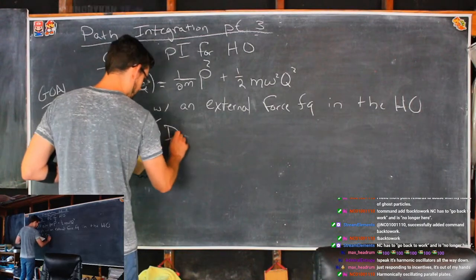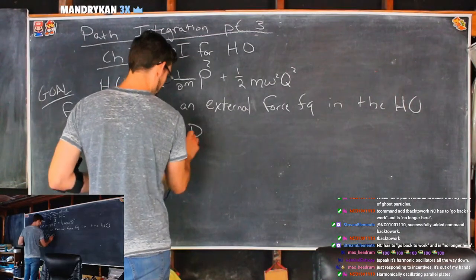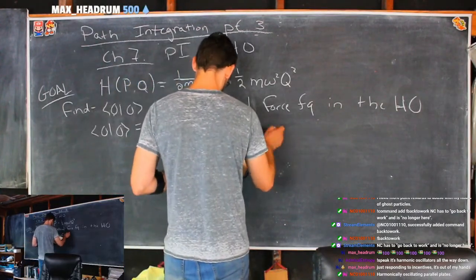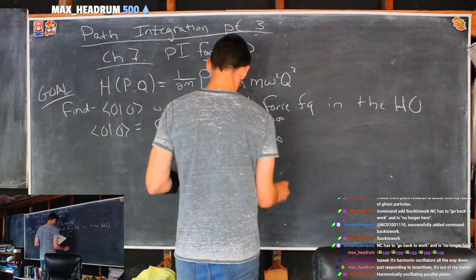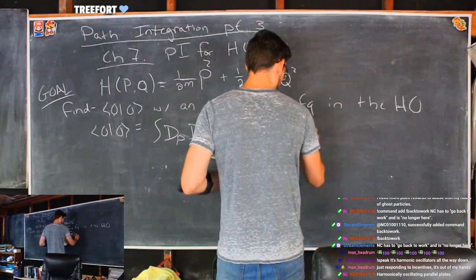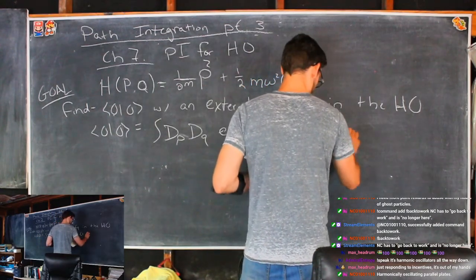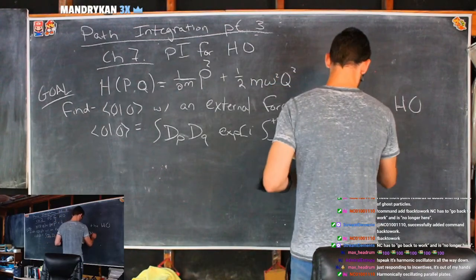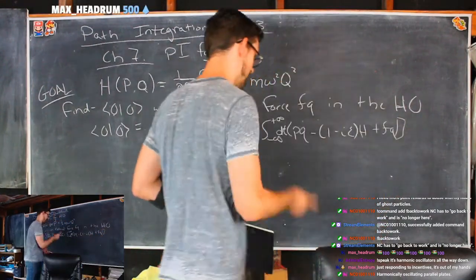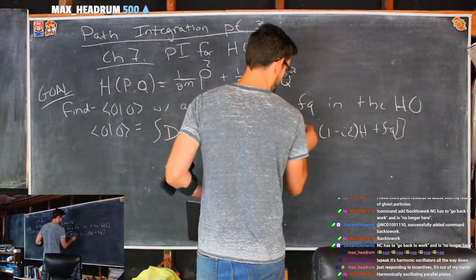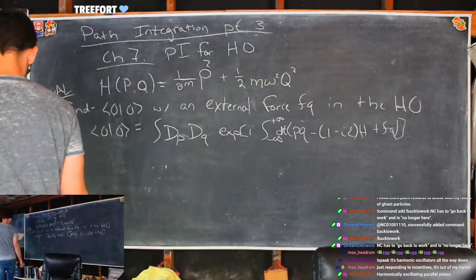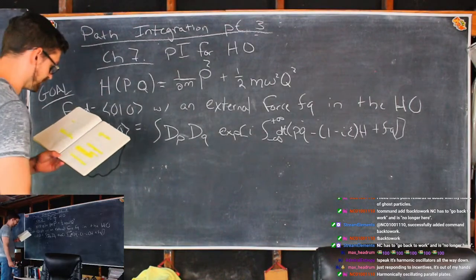This is what it looks like: we have the integral over all paths for P, integral over all paths for Q, times the exponential of i times the integral of the action — which is P Q-dot minus one minus i-epsilon times the Hamiltonian, plus FQ. The i-epsilon has made its way back and it's going to be very necessary.